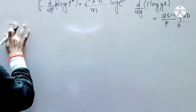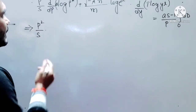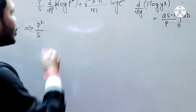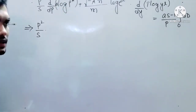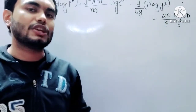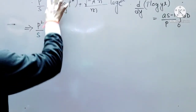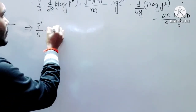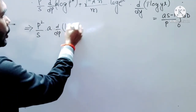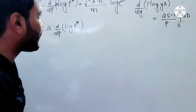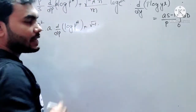Now let us simplify. We have p squared over s. Whenever a constant is in front of a differentiation, it comes outside, because differentiation does not affect constants multiplied with a function. So the constant a comes outside the differentiation. We are getting d/dp of log of p to the power h. Here we are also getting root of minus 1, and a squared comes outside the root, giving us capital A.